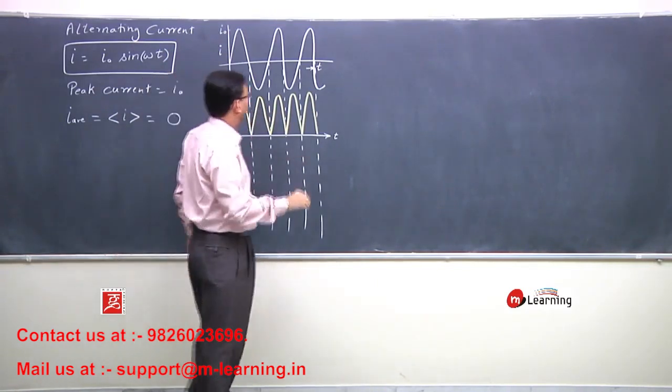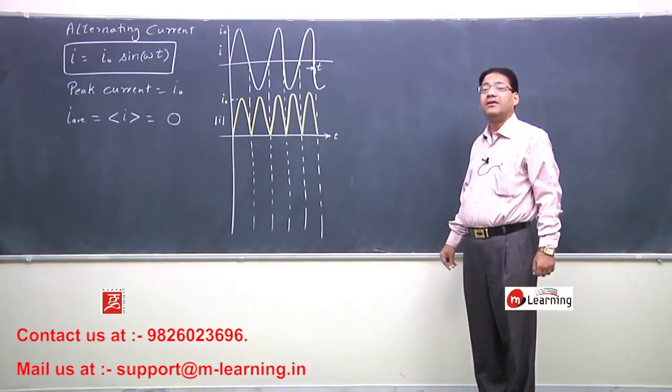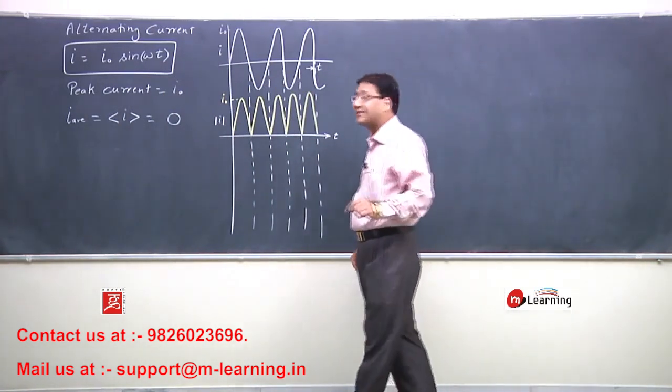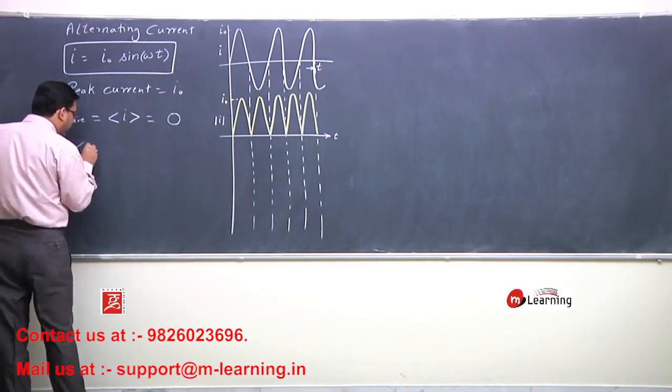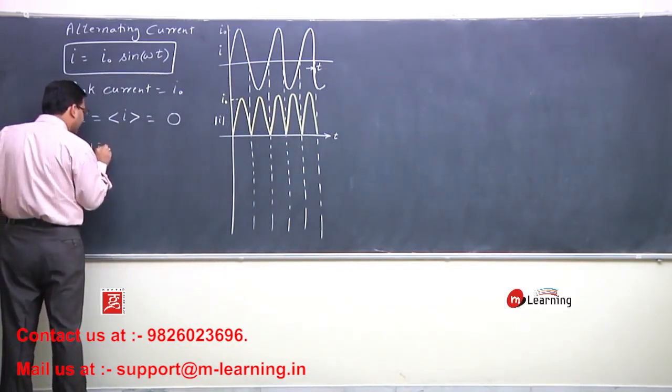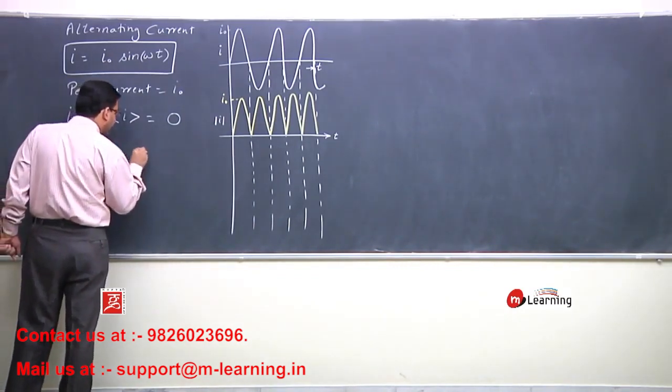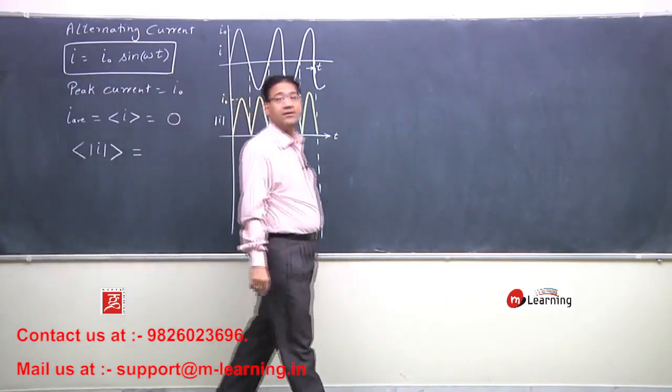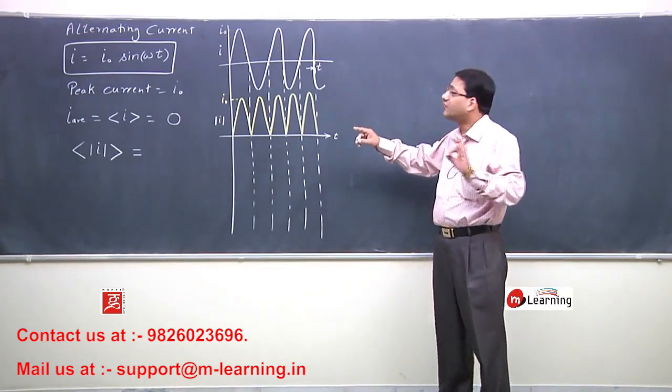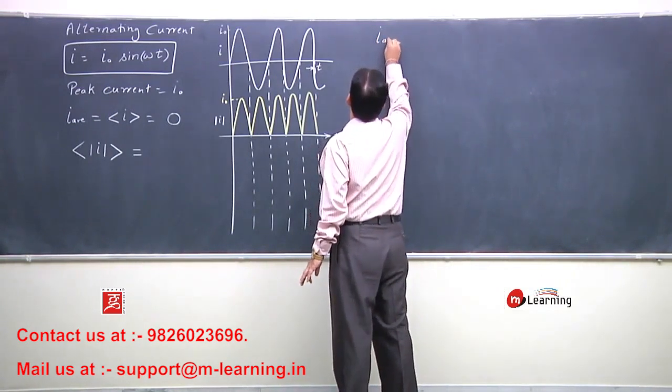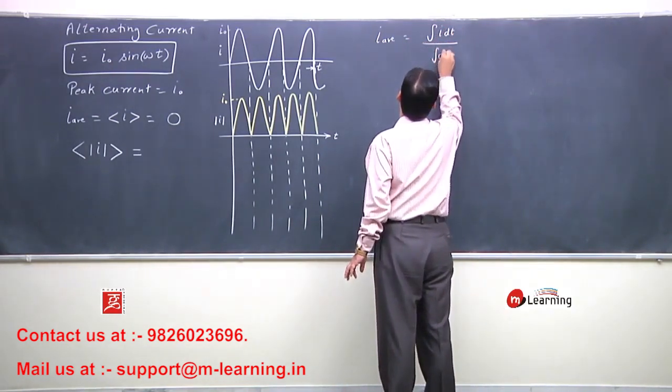The current is I₀. Now if I ask you what is average of mod I, magnitude of I ka average, current is integral of i dt upon integral of dt.